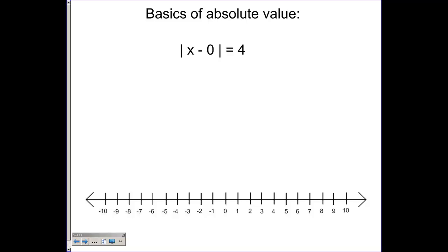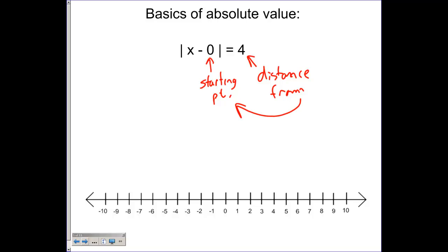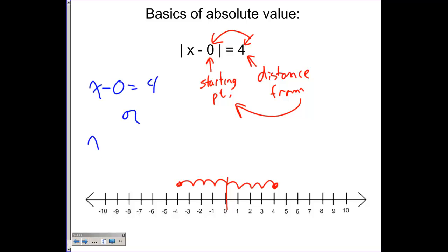Another way to think about this: the absolute value of x minus zero equals four. You can think of the zero as your starting point and the four as the distance from that starting point. So we want to know what number is four units away from zero. Going four units up gives positive four, and going four units down gives negative four. We can rewrite this as x minus zero equals four, or x minus zero equals negative four, and then solve both equations.